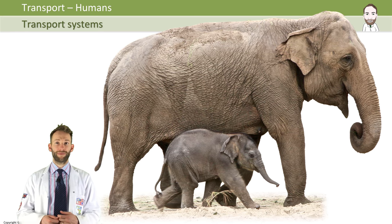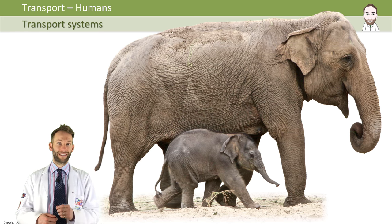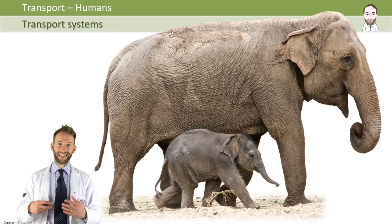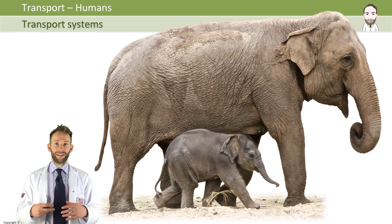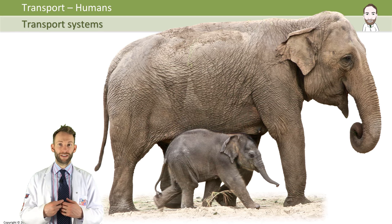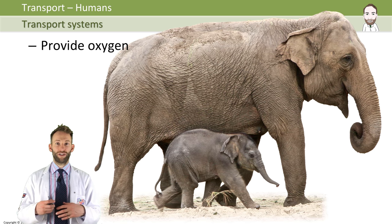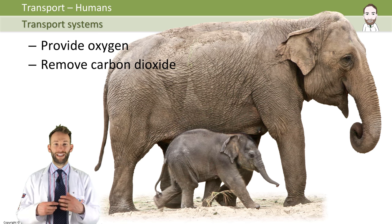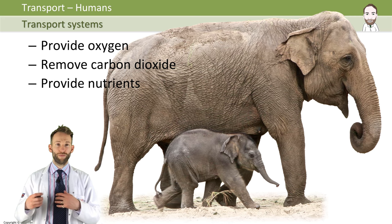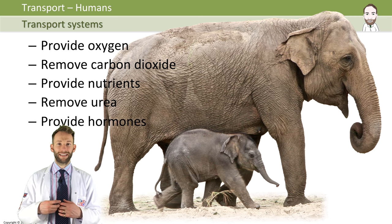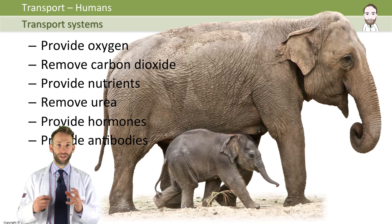Larger multicellular organisms have a small surface area to volume ratio, therefore they cannot rely on diffusion to get all the things that their cells need around the whole body. They need some kind of circulatory system in order to transport important molecules around the body — things like oxygen and get rid of carbon dioxide, provide nutrients and remove waste products like urea, provide hormones or antibodies. So large organisms tend to have some type of transport system.